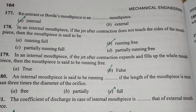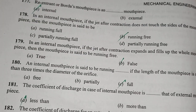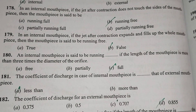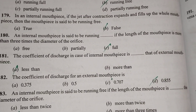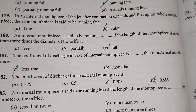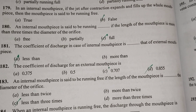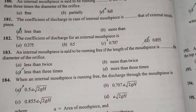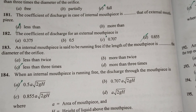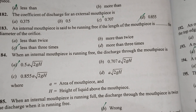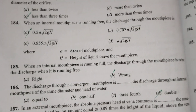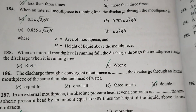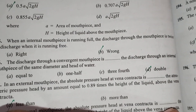In an internal mouthpiece, if the jet after contraction does not touch the sides of the mouthpiece, it is said to be running free. In an internal mouthpiece, if the jet after contraction expands to fill the whole mouthpiece, it is said to be running full. The mouthpiece is said to be running full when its length is more than three times the diameter of the orifice. The coefficient of discharge for an internal mouthpiece is less than that for an external mouthpiece. The coefficient of discharge for an external mouthpiece is 0.855. An internal mouthpiece is running free when its length is less than 3 times the diameter of the orifice. When an internal mouthpiece is running free, the discharge is 0.5a·√(2gH). The discharge through a convergent mouthpiece is double that through an internal mouthpiece of the same diameter and head of water.